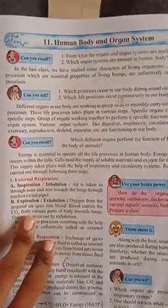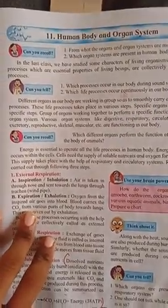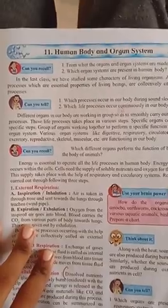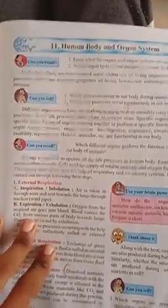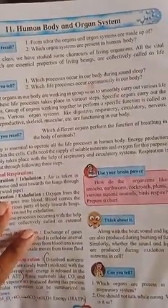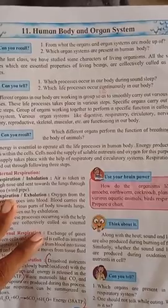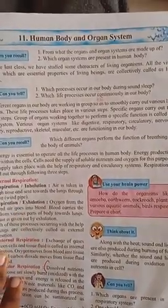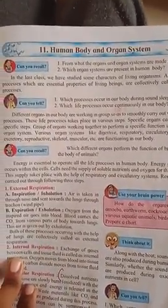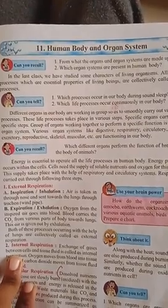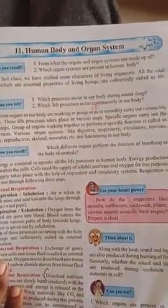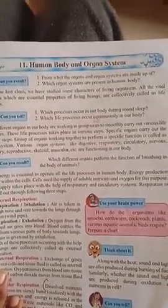Good morning everyone. Today we are going to study Science of Standard 8th, Chapter Number 11: Human Body and Organ System. We continue from where we left off — you have already seen the introduction part on how the human body functions. Last year we studied some characteristics of living organisms.